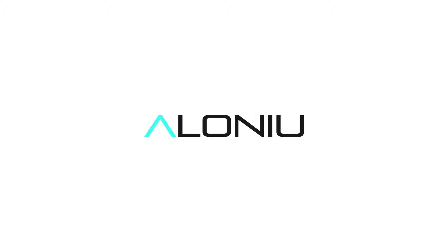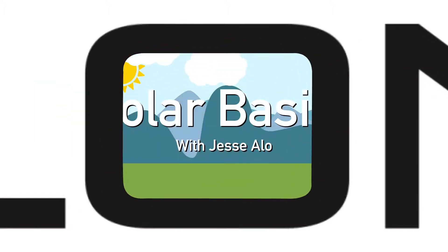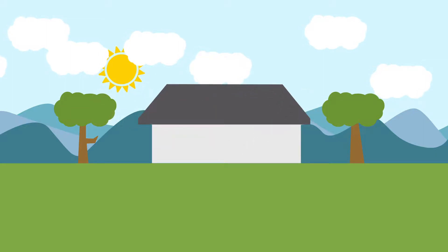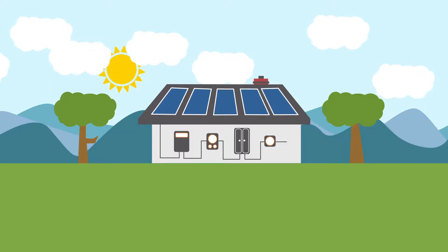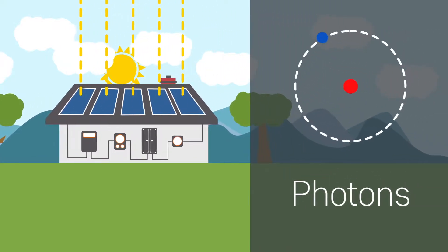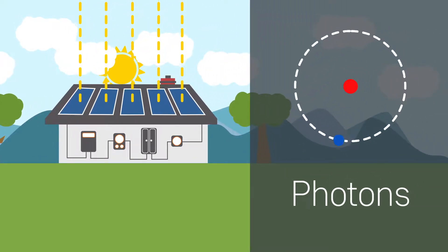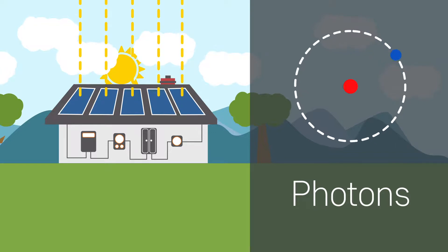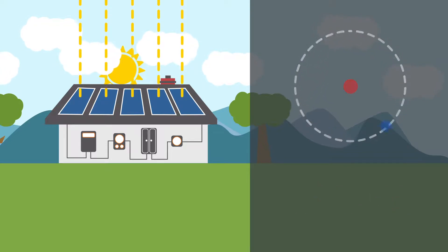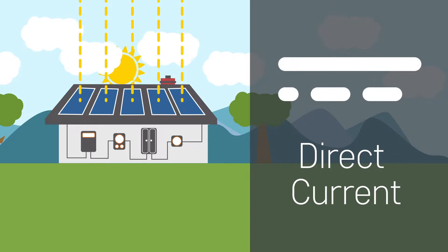Hello everybody and welcome to Solar Basics. I'm going to go over some of the basic things you need to know about solar so that you can explain it properly and truly understand what you're talking about. Solar is pretty simple — essentially the Sun comes up in the sky, the solar rays emit what we call photons, those photons travel down to Earth, hit the top of the panels, and those panels convert those photons into DC, or what we call direct current.